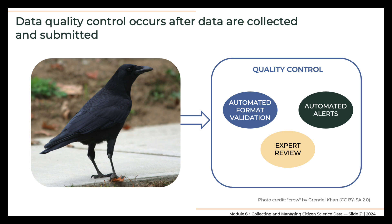The aforementioned eBird provides an excellent example of web-based quality control. When a user clicks on submit data, whether on the website or in the app, they are served a checklist of birds likely to be seen at the time and location from which they are submitting information. They can report species not on the list, but if they do, they are likely to get an alert requesting further information in the form of a written description or photo. They also receive an alert if they report a species in higher numbers than might be expected, so that they can be sure they are entering the number that they intended to enter. In this way, potential errors in the data can be identified and removed by the participant.